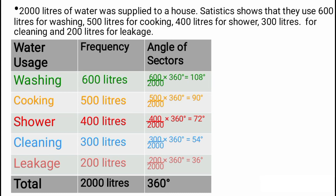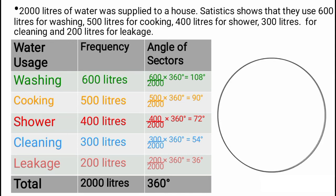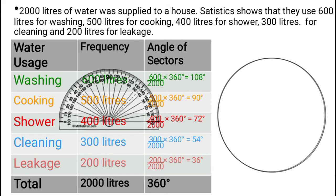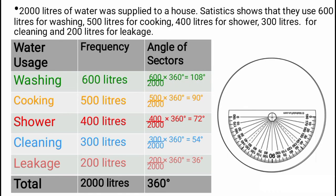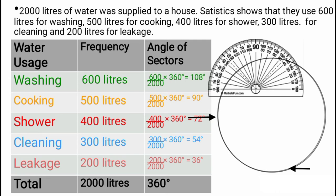Now, coming to the tricky part — cutting the circle into sectors. First, you draw a circle of comfortable radius, any radius of your choice. From the center of the circle, with the aid of a protractor, we measure the different angles and cut the circle into sectors. Let's cut out the sector for 108 degrees. Mark out where zero degrees is, and mark out where 108 degrees is — just about here. Then draw a line from the center to each marked point. We have just drafted out the sector for 108 degrees, and that is for washing.